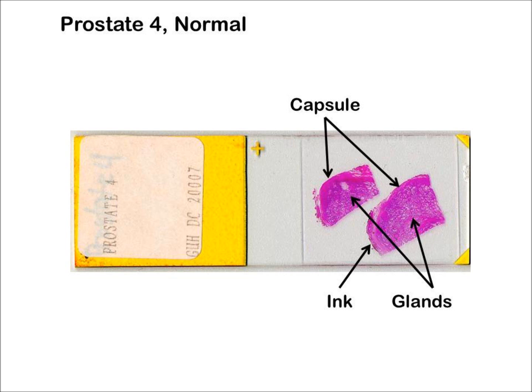When the tissue is removed from the patient, its surface is painted with a dye to mark its boundary. After sectioning, the pathologist determines if the tumor cells extend to the margin. If they do, then perhaps not all of the tumor cells have been removed. However, if no tumor is present at the boundary, then this suggests that all the tumor has been excised.